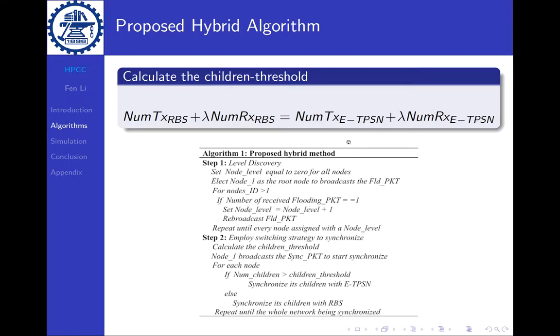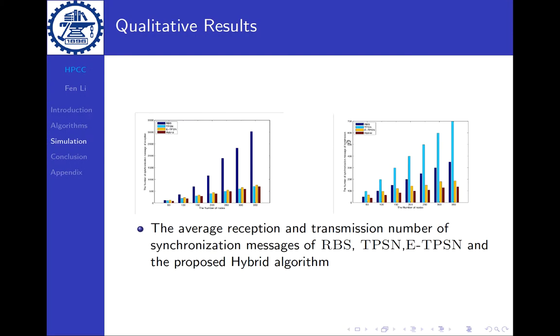So the left figure is the reception and the right figure is the transmission number. The average number shown for RBS, TPSN, E-TPSN, and our proposed hybrid are shown. The hybrid is the rightmost one. As you can see, it has the best performance and increases very slowly compared to others.